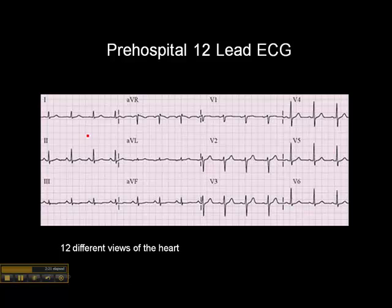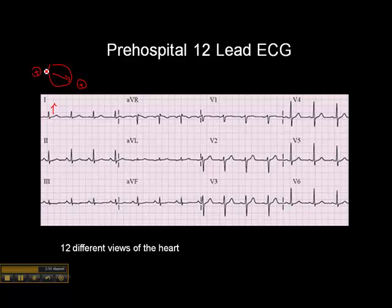When the heart depolarizes in this direction, if the positive electrode is here and the wave of depolarization is moving toward it, then we get a positively deflected QRS. We see this in leads 1, 2, and 3. AVR, on the other hand, is a lead taken from the right arm, and the wave of depolarization would be moving away from this lead, and consequently we get a negatively deflected QRS complex.